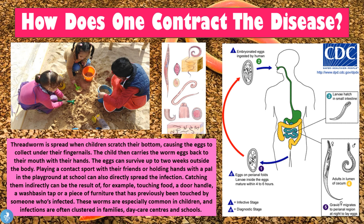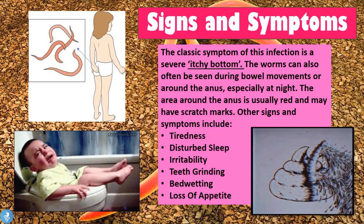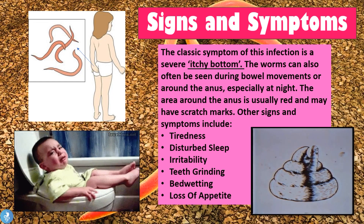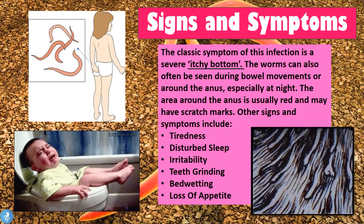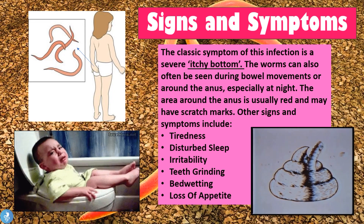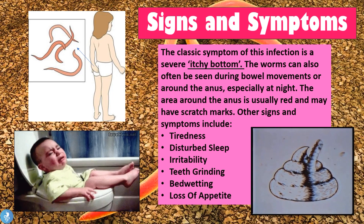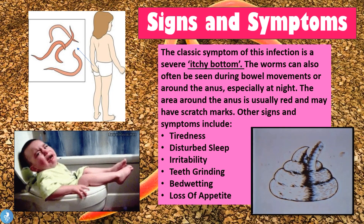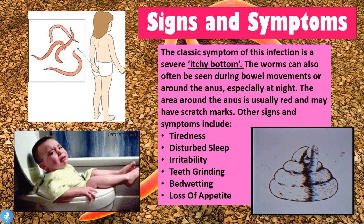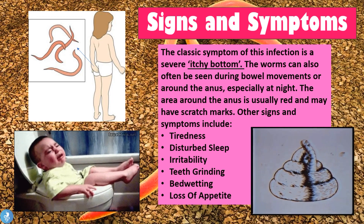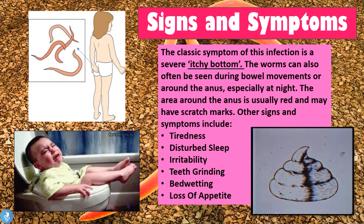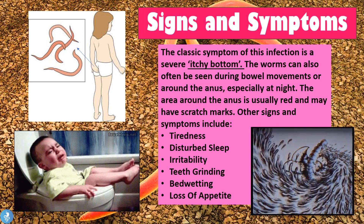Now let's take a close look at some signs and symptoms of this disease. The classic symptom of this infection is a severe itchy bottom. The worms can often be seen during bowel movements or around the anus, especially at night, because the female worms go to lay their eggs at night. This movement of the female worms toward the anus is an itchy process which causes irritation to the patient — hence the classic symptom of the severe itchy bottom.